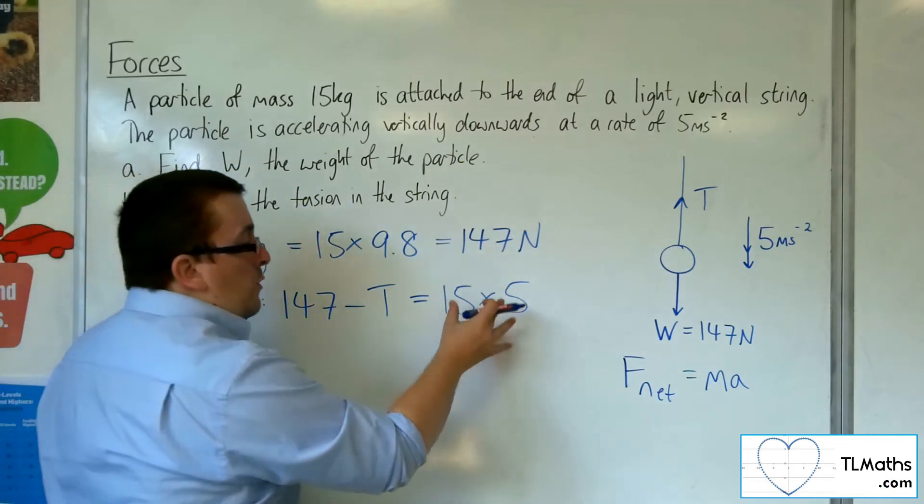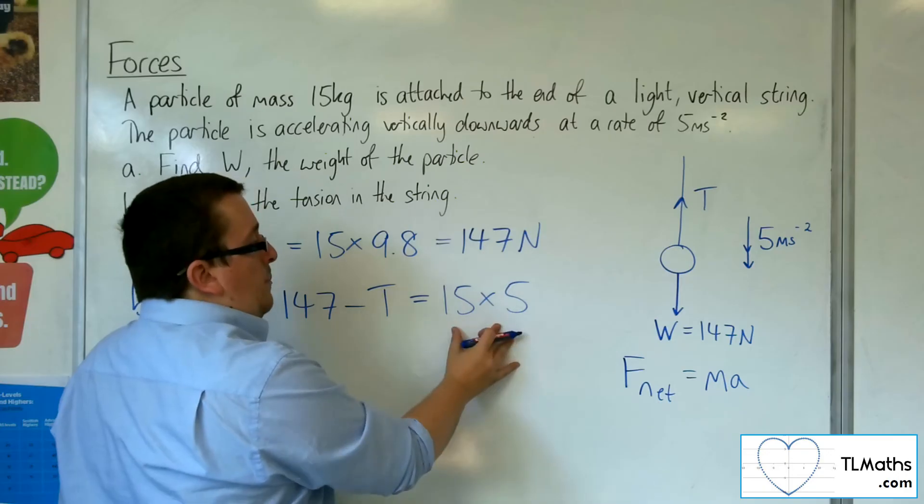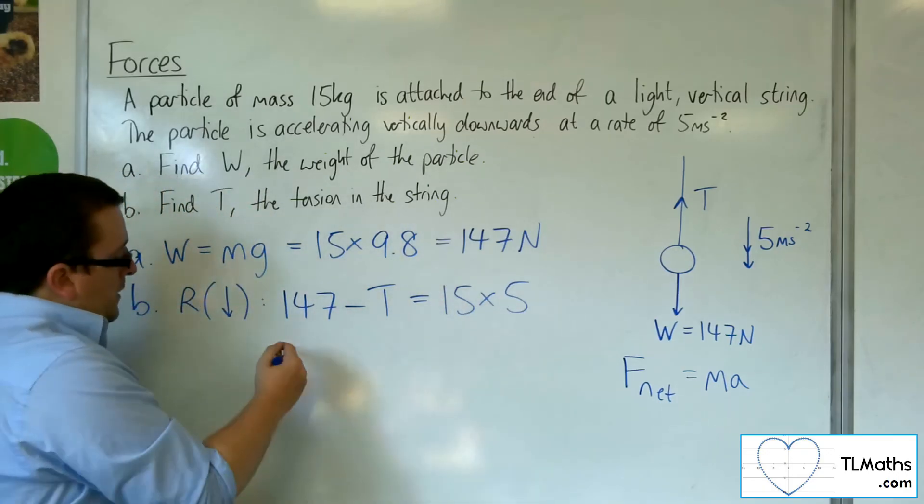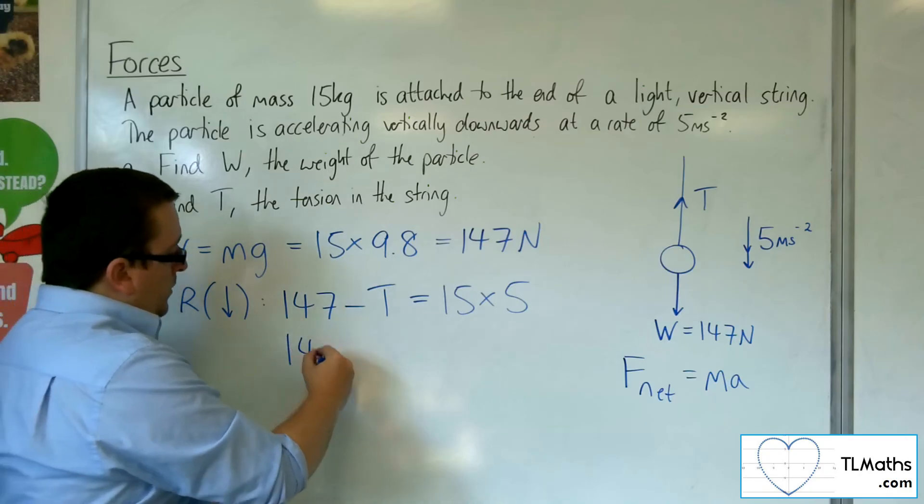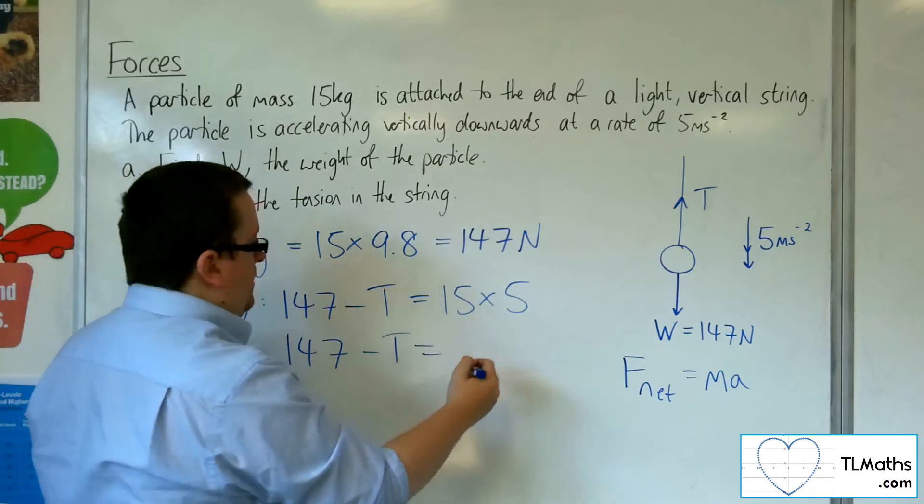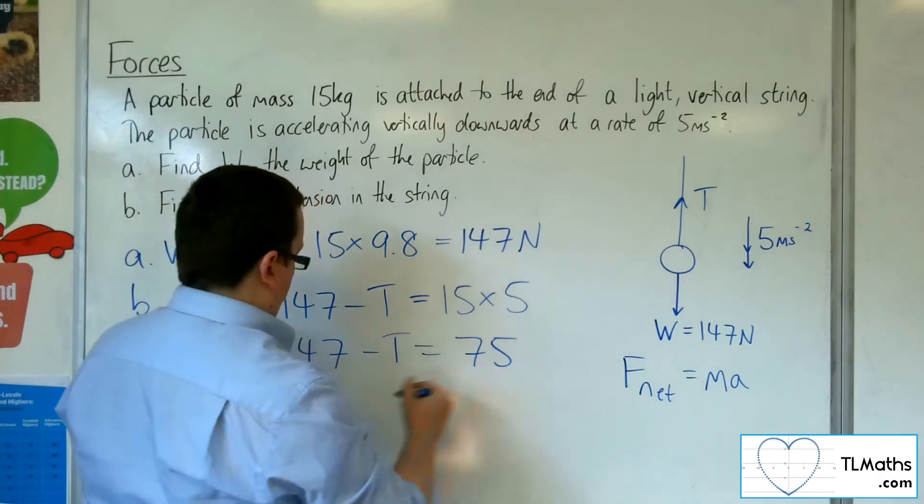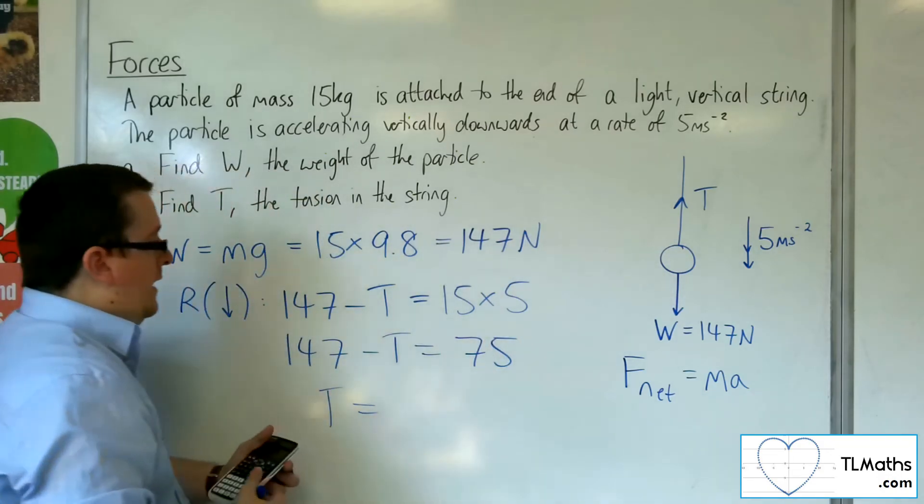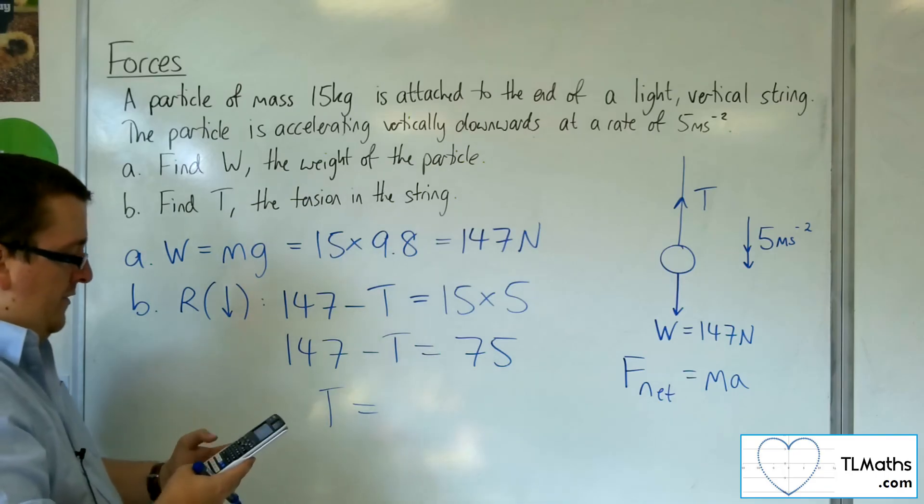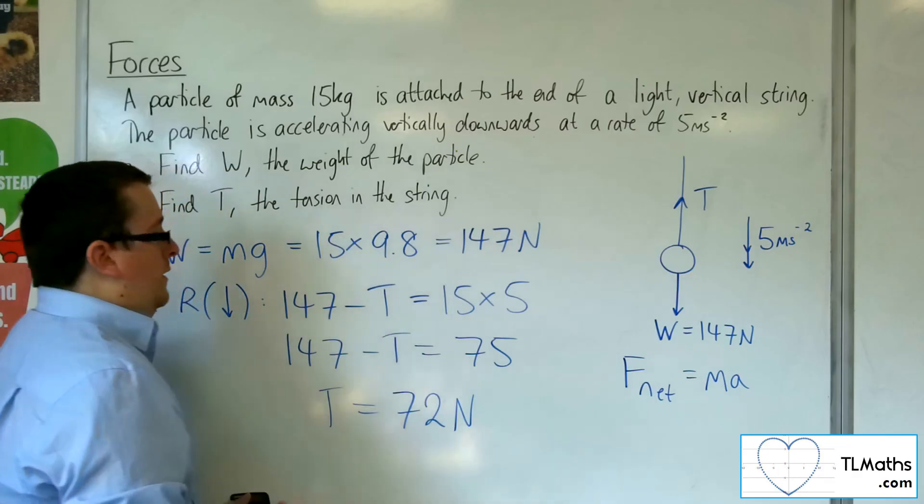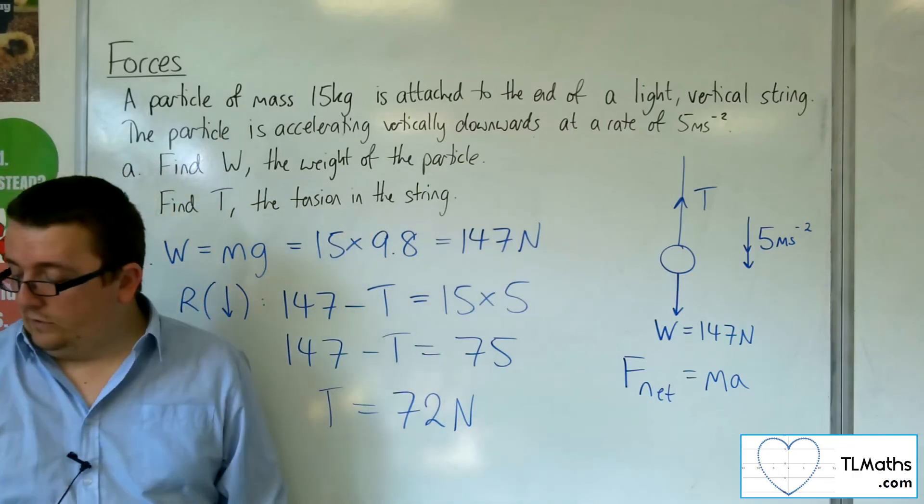It's not equal to 0. If it was in equilibrium, we'd be putting this equal to 0, but it's not. So 15 times 5 is 75. The tension is 147 take away 75, which leaves us with 72 newtons. So the tension is 72 newtons.